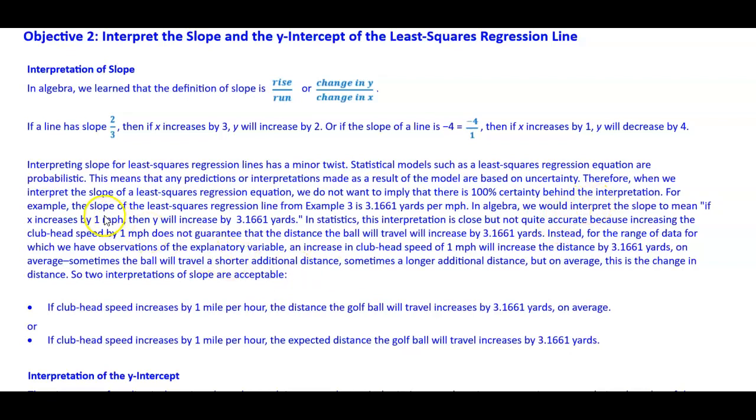So for example, the slope of the least squares regression line from Example 3 is 3.1661 yards per mile per hour. In algebra, we would interpret the slope to mean if x increases by 1 mile per hour, then y will increase by 3.1661 yards.